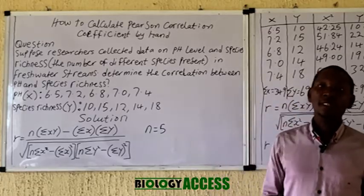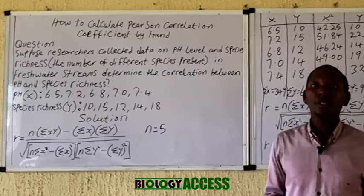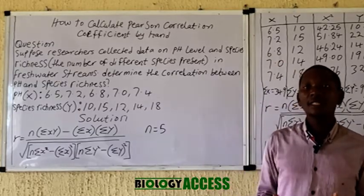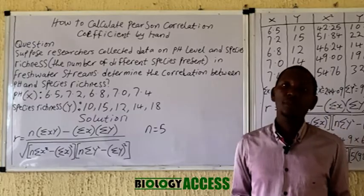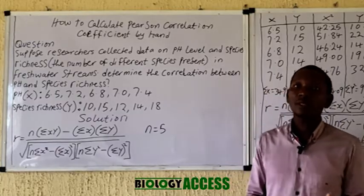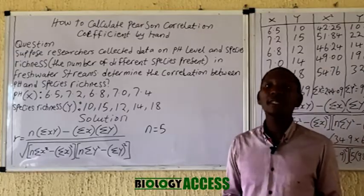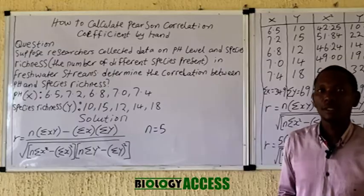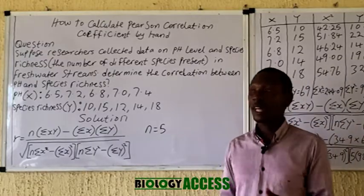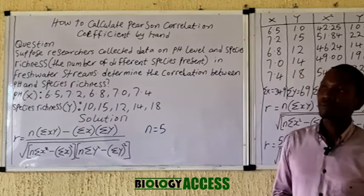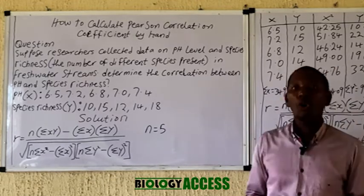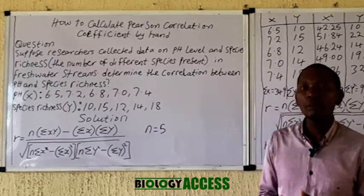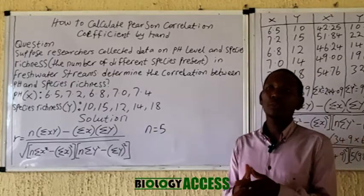Correlation in biostatistics, or in statistics in general, is actually measured using the correlation coefficient. In today's class, we'll be talking about how to calculate Pearson's correlation coefficient by hand. The value of the correlation coefficient usually ranges from plus one to minus one.